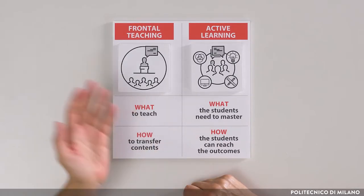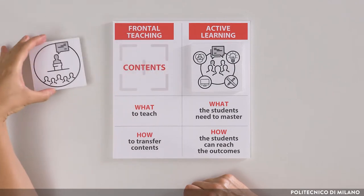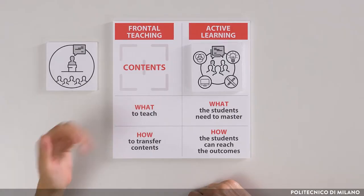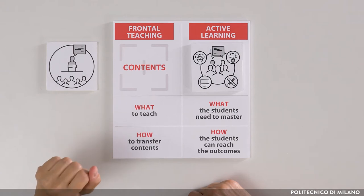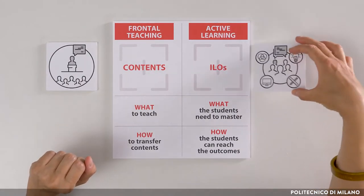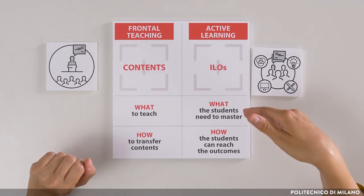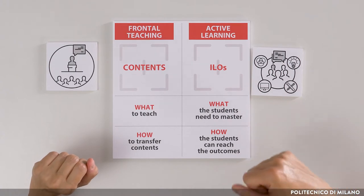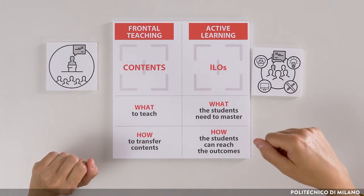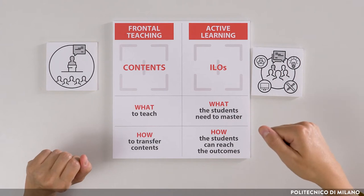In a paradigm based on frontal lessons, we mainly start from contents — in other words, what to teach and how to transfer them. If we integrate this paradigm with active teaching frameworks, the focus tends to shift towards the intended learning outcomes: what the students need to master, how the students can reach the outcomes, and how we, as teachers, can help them.